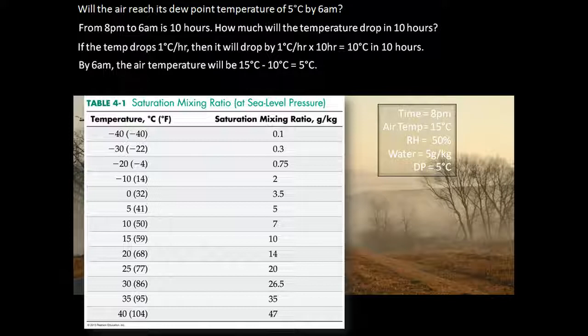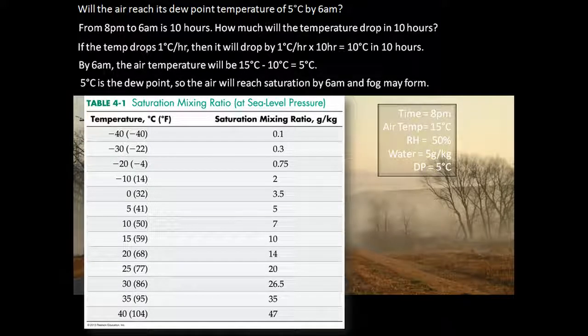By 6 AM, the air temperature will be 15 degrees Celsius (the starting temperature) minus the 10 degrees Celsius that it cools over those 10 hours, which equals 5 degrees Celsius. Since 5 degrees Celsius is the dew point, the air will reach saturation by 6 AM and fog may form.